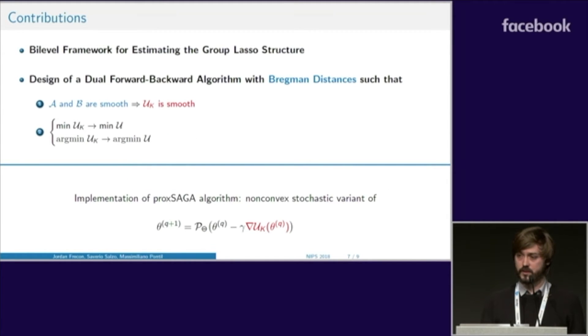Here are the contributions of our paper. First, we have proposed this bi-level scheme to estimate the group lasso structure. We have designed a dual forward-backward algorithm with Bregman distances chosen to make A and B smooth. We have proved that using this scheme, you can achieve convergence of your approximate problem to the exact one in terms of minimum value and minimizer.